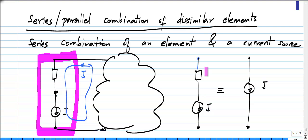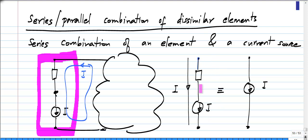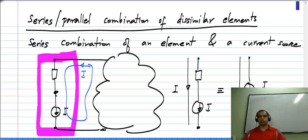So, if this current source has a value I, it means that a current I will be flowing from here to there, and that is independent of what the voltage across this current source is. Similarly, it will be independent of what the voltage across the whole combination is, because the voltage across the whole combination is the voltage across the current source — which can be anything — plus the voltage across this element. So the result is also a current source which forces a current I to flow in this direction regardless of the voltage across it. The series combination of a current source and any element, including a voltage source, is a current source.